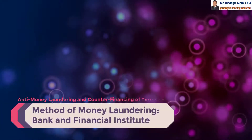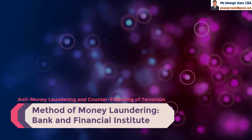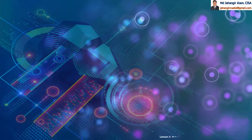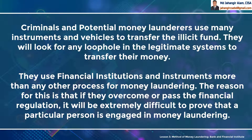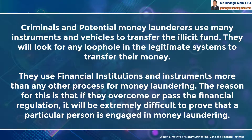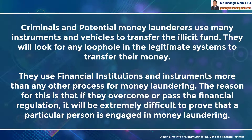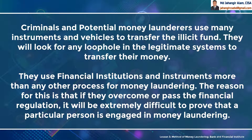Section 4: Methods of Money Laundering. Criminals and potential money launderers use many instruments and vehicles to transfer illicit funds. They will look for any loophole in a legitimate system to transfer their money. They use financial institutions and instruments more than any other process, because if they overcome or pass the financial regulation, it is extremely difficult to prove that a particular person is engaged in money laundering.